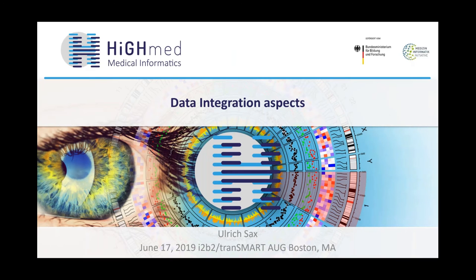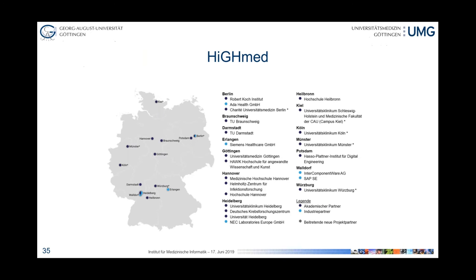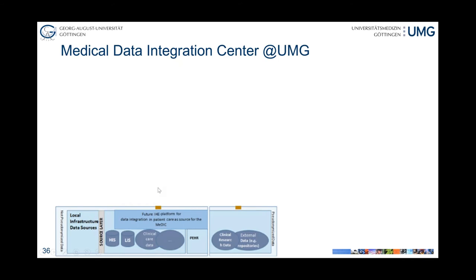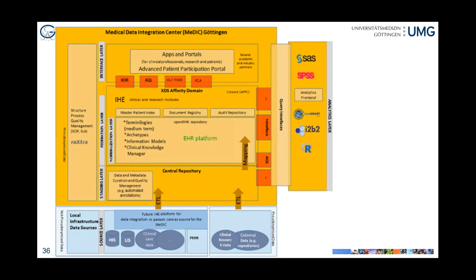Last slide — a quick look at the HiGHmed project with one interesting use case. You see the different sites covering all over Germany. There is a data integration center layer as a blueprint for the other integration centers. In blue you see the data sources, then different ways for staging, the federation layer, and the normalization layer with openEHR flavor, and the interfaces layer using IHE profiles and HL7 FHIR. On the right-hand side you see i2b2 tranSMART — you have to check the data at every single point, for example at the ETL processes, looking into the EHR platform, or looking up in the portals.